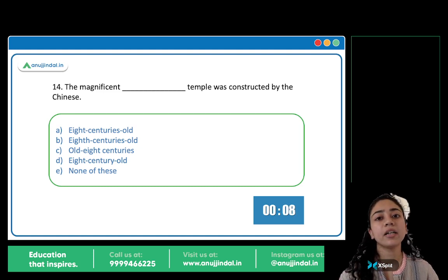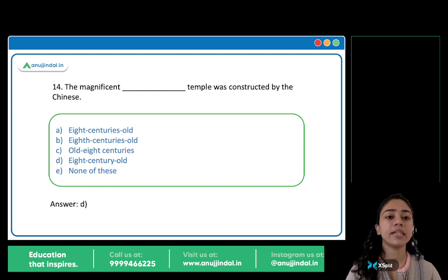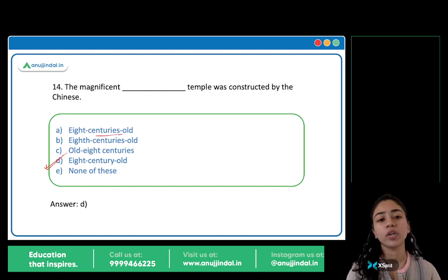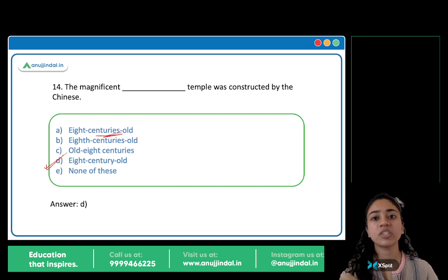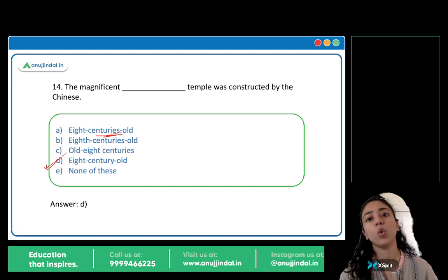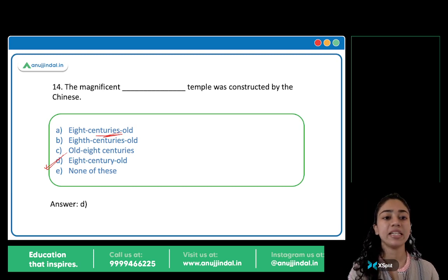The magnificent blank temple was constructed by the Chinese. The answer is D: Eight century old. Note: it's 'eight century old' not 'centuries old' — when used as a compound adjective before a noun, you don't pluralize: ten rupee note, ten year old boy, five digit number. So it's eight century old temple. D is the correct answer.